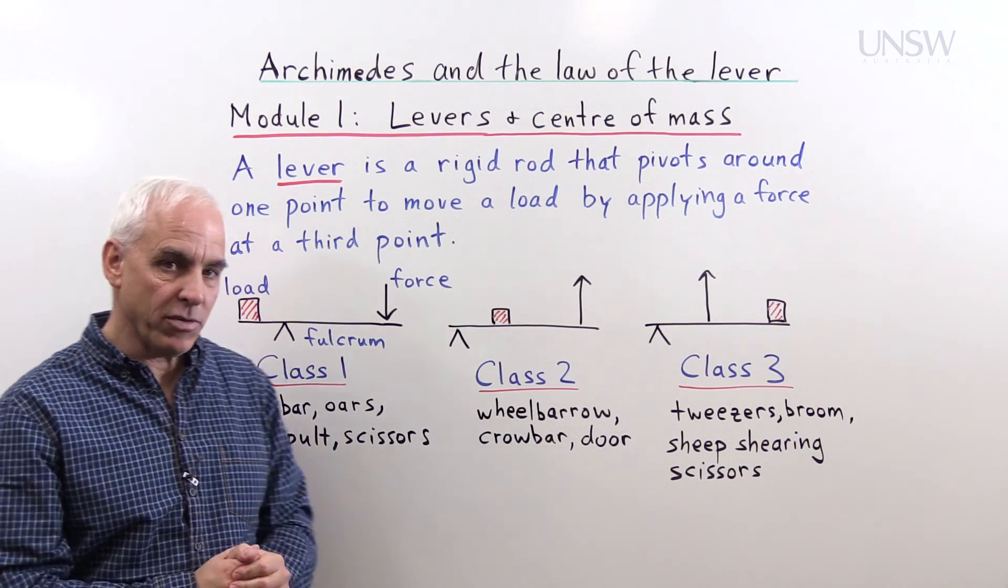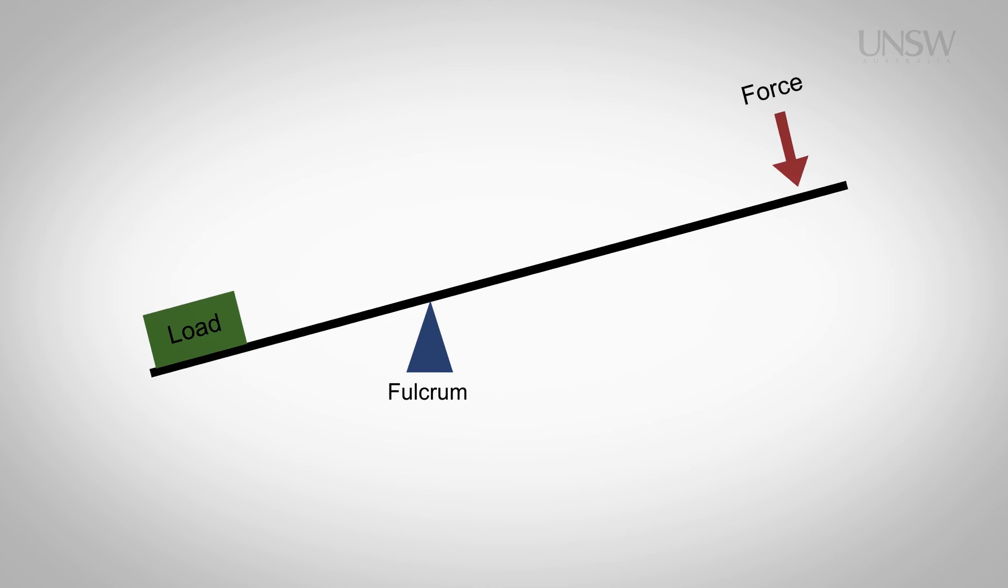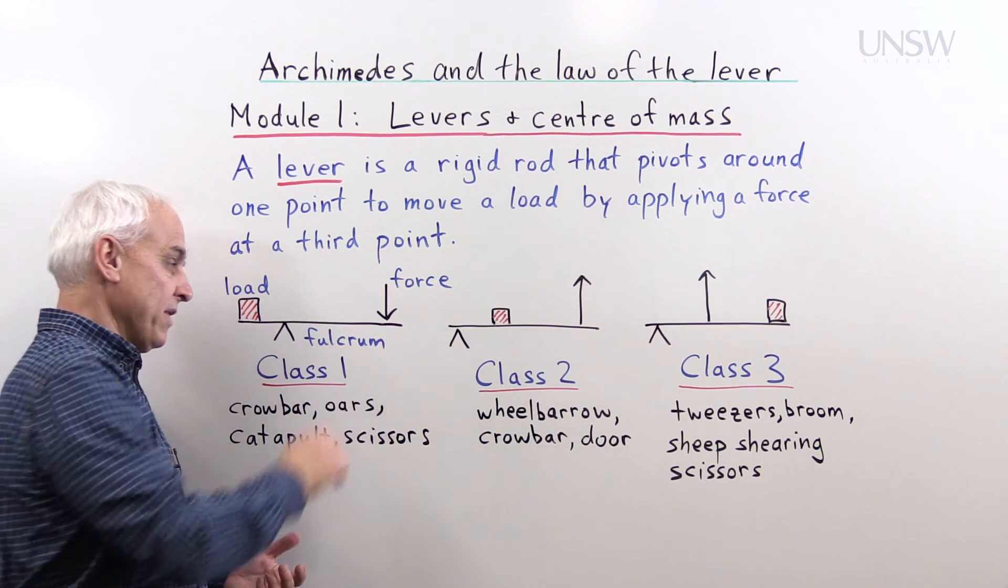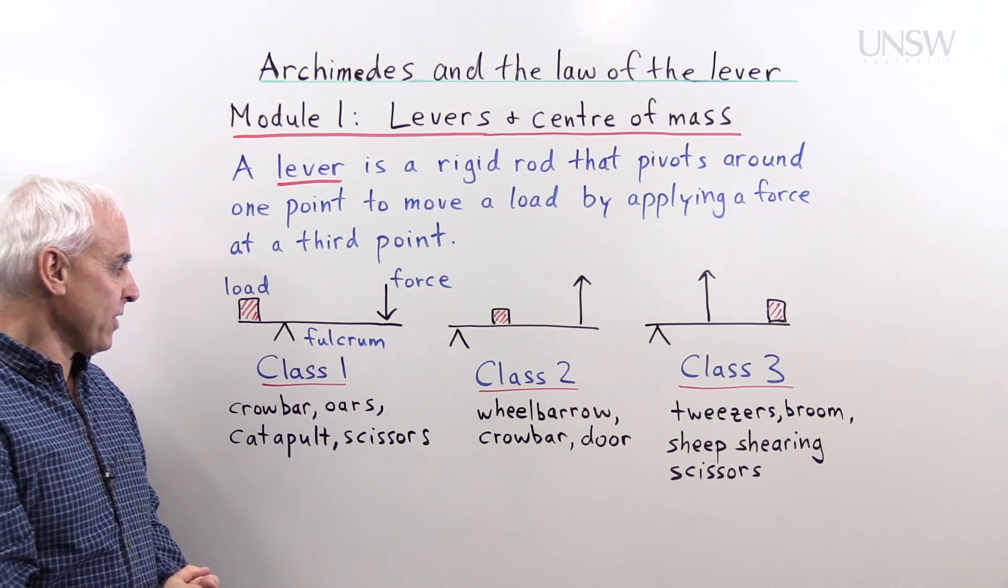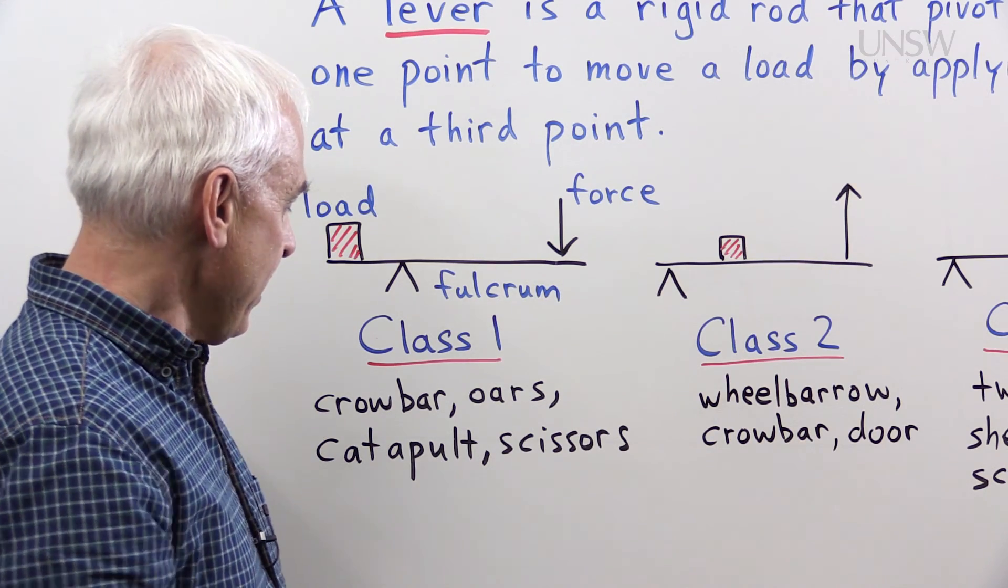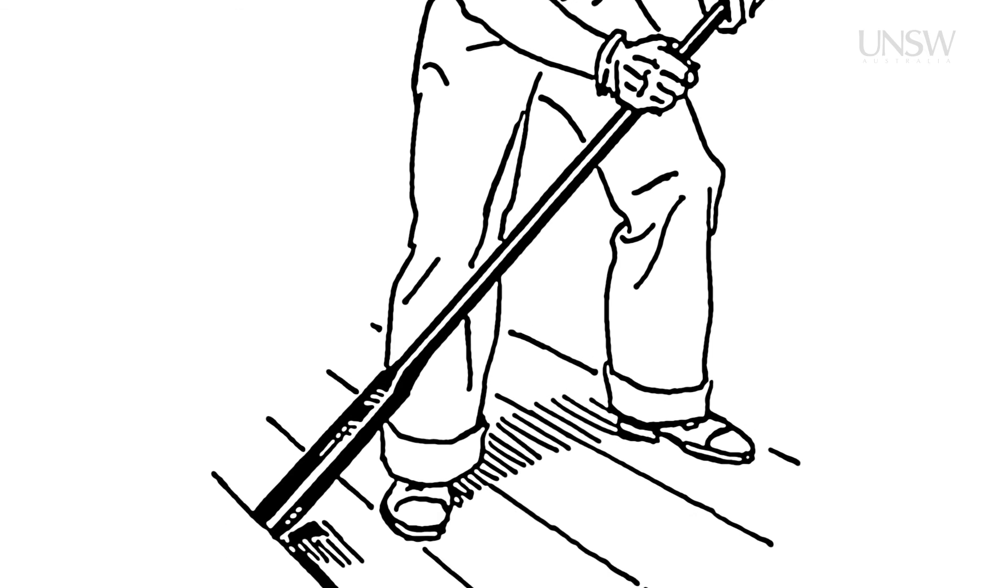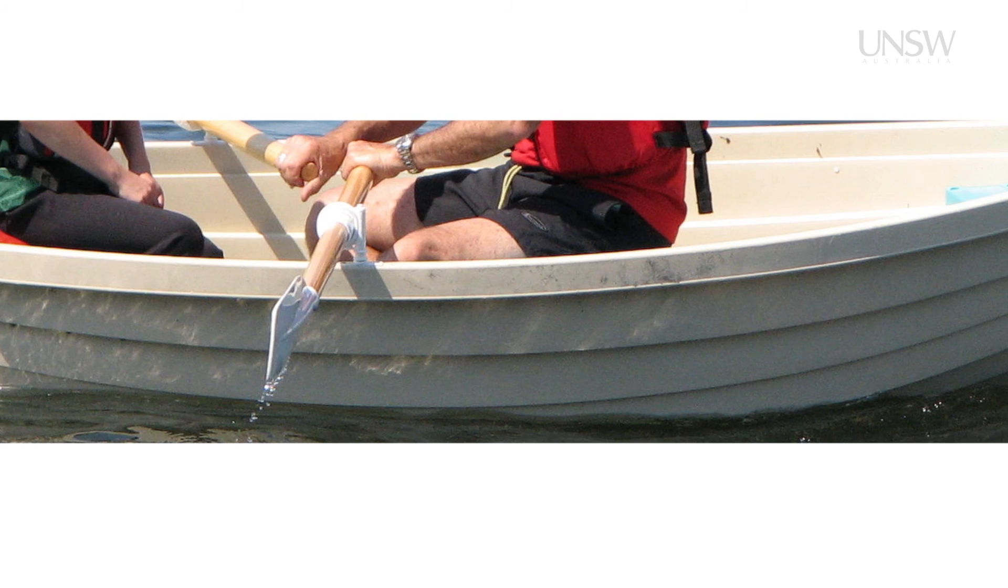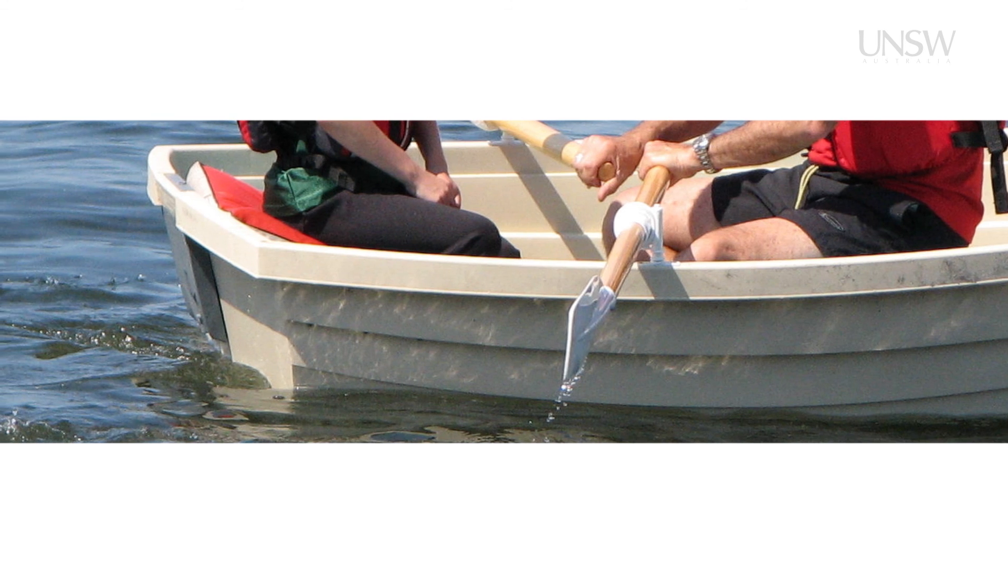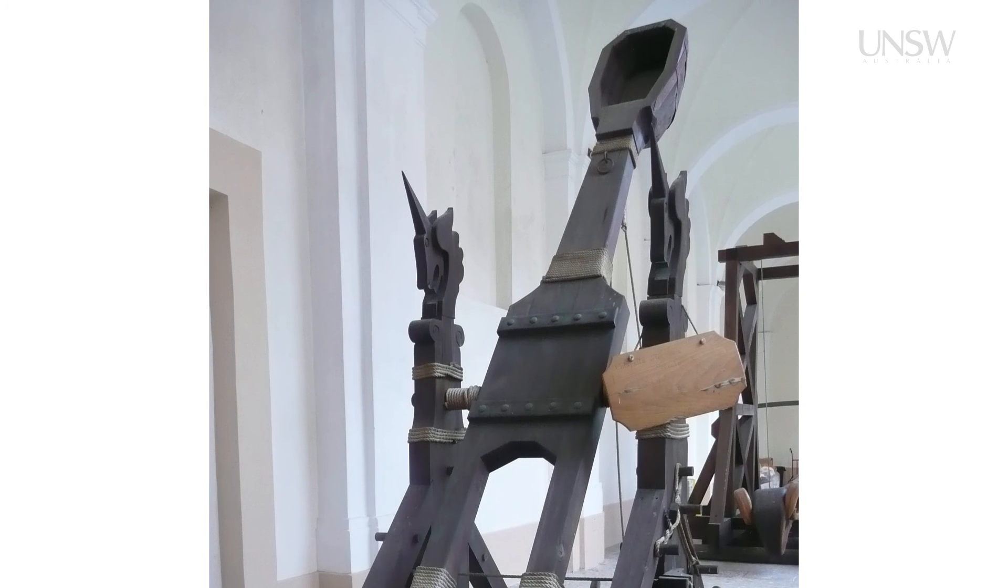So the class one lever, which is perhaps the most familiar, is where we're trying to lift a load, and we do that by getting a bar and finding a place to pivot the bar, and then applying a force on the other side of the lever. So in this case, the fulcrum is between the load and the force. And there are a number of familiar kinds of examples of a class one lever, including a crowbar, but also the oars on a boat, for which the lock is the fulcrum. A catapult, also going back to the ancient world, is an example of such a situation, as is a pair of regular scissors.